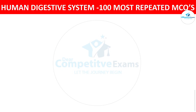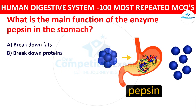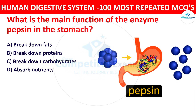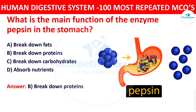Question number sixteen: What is the main function of the enzyme pepsin in the stomach? The options are breakdown of fats, breakdown of proteins, breakdown of carbohydrates, or absorb nutrients. The correct answer is breakdown of proteins. Pepsin is a gastric enzyme that breaks down proteins into smaller peptides.